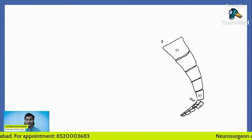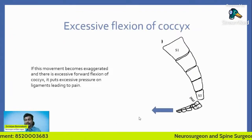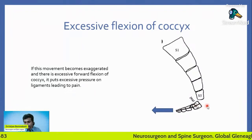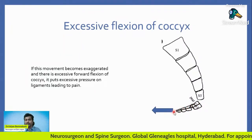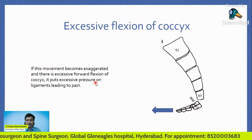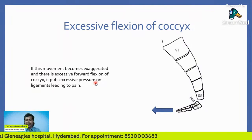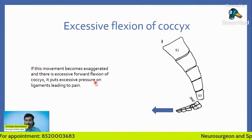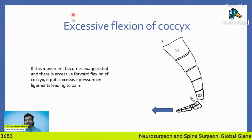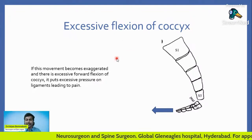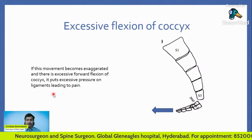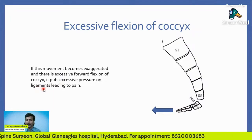How much is normal? Physiologically, the forward movement is less than 20 degrees. In this video, the coccyx has moved abnormally forwards — the normal physiological flexion has become exaggerated. This excessive forward flexion of the coccyx puts excessive pressure on ligaments leading to pain. So this excessive flexion of the coccyx, which happens during sitting in some patients, causes excessive pressure on the ligaments leading to pain.